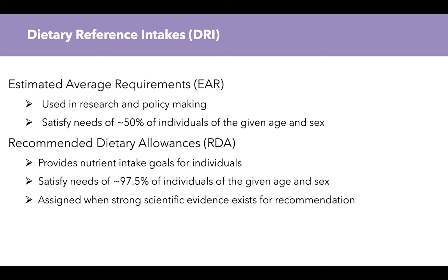Then we have the Recommended Dietary Allowances, or RDA. This is one that we do apply and recommend to individuals. Unlike the EAR, which is only going to satisfy 50% of individuals, the RDA is going to satisfy 97.5% of individuals of that given age and sex. They assign an RDA to a nutrient when there's strong scientific evidence existing to make that recommendation — evidence through true research showing this amount meets the needs of about 97.5% of individuals in the given age and sex.